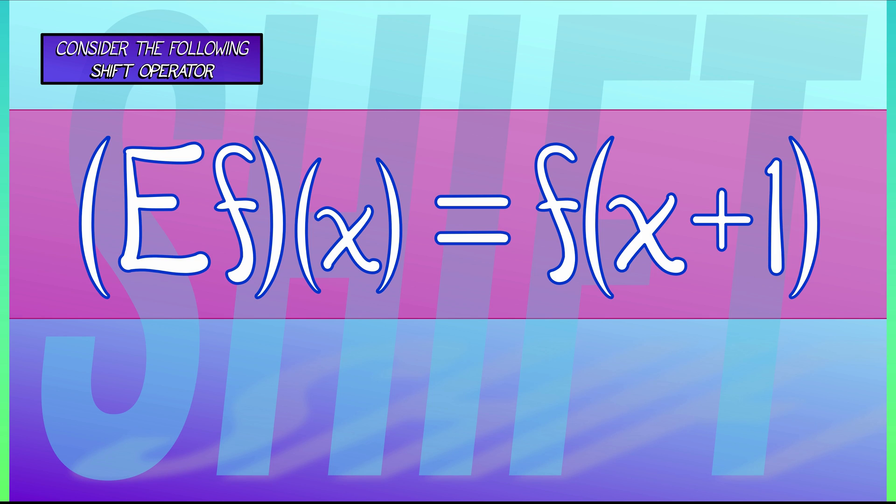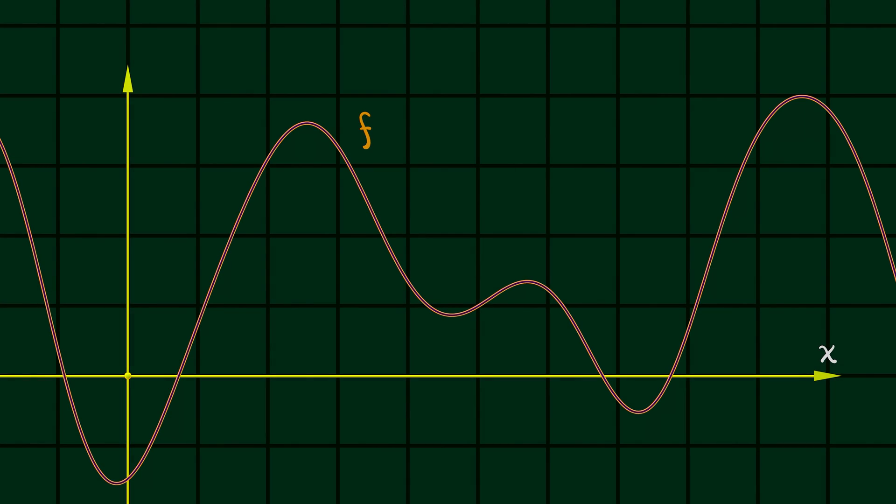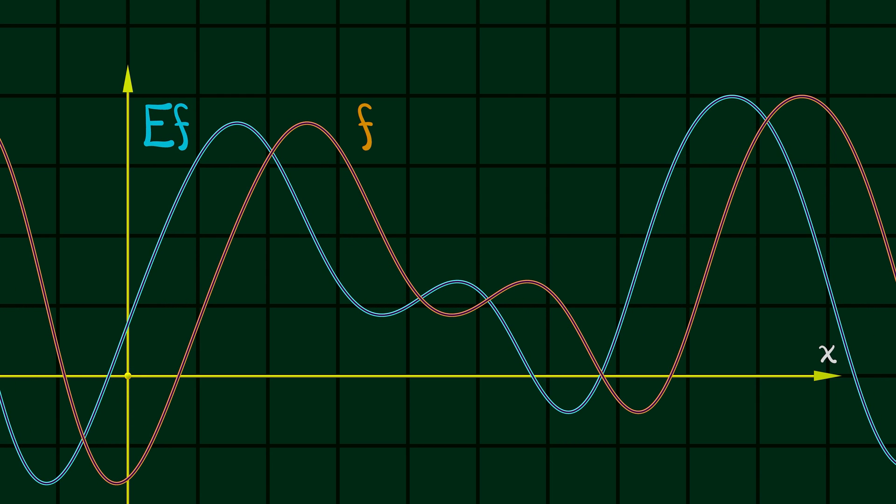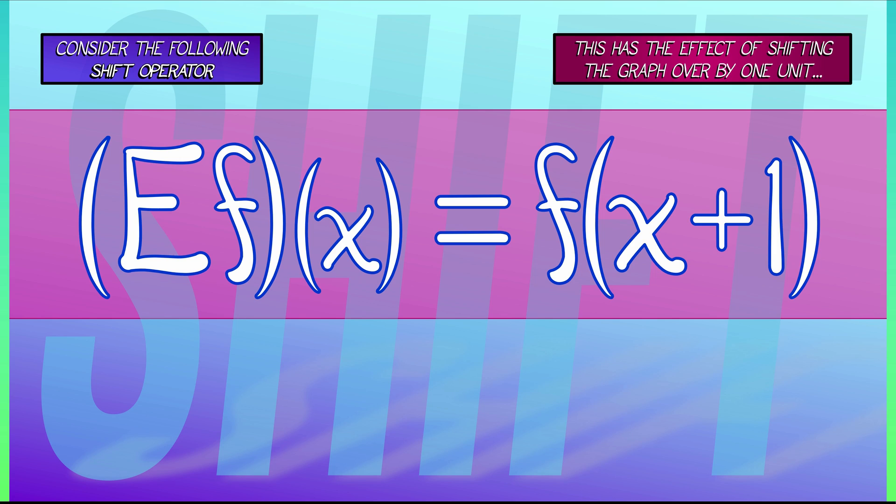So what the shift operator E does is it shifts the function over by one unit. If you think about what this does to the graph of this function, it's really clear what the shift operator is doing. Now, this feels a lot different than the other operators we've been looking at—the differentiation operator, the log operator, exponentiation—all these sorts of things.